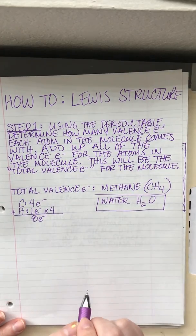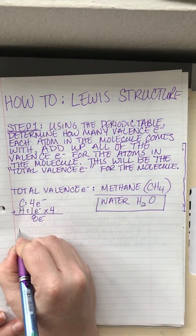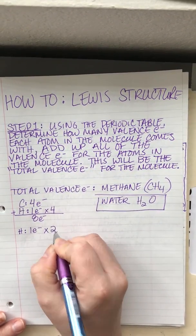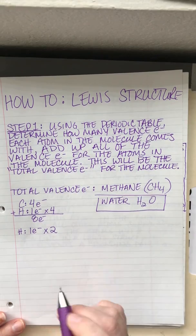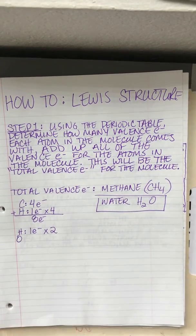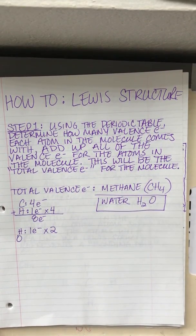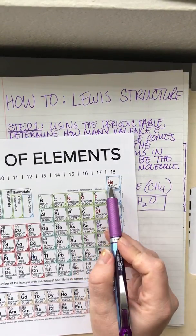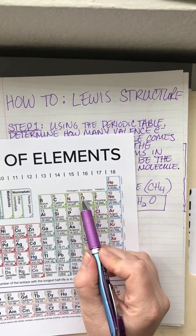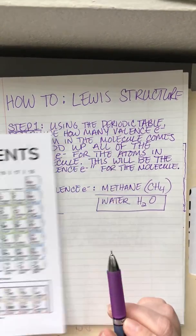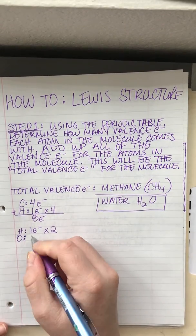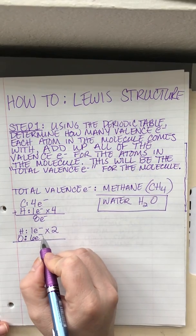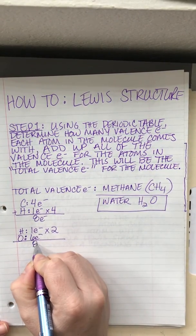If we look at the total valence electrons for water, hydrogen has one electron and there are two hydrogens, so we multiply that by two. Oxygen has eight total electrons, two of which are core electrons, for a total of six valence electrons. So we have a total of eight electrons.